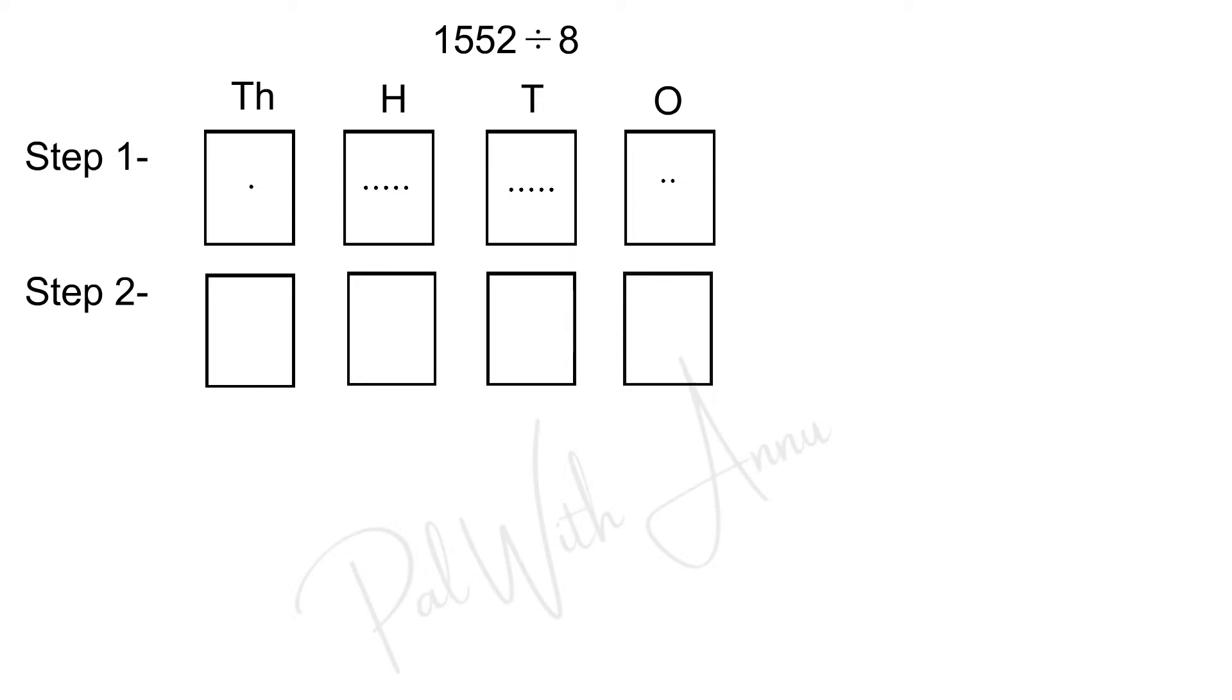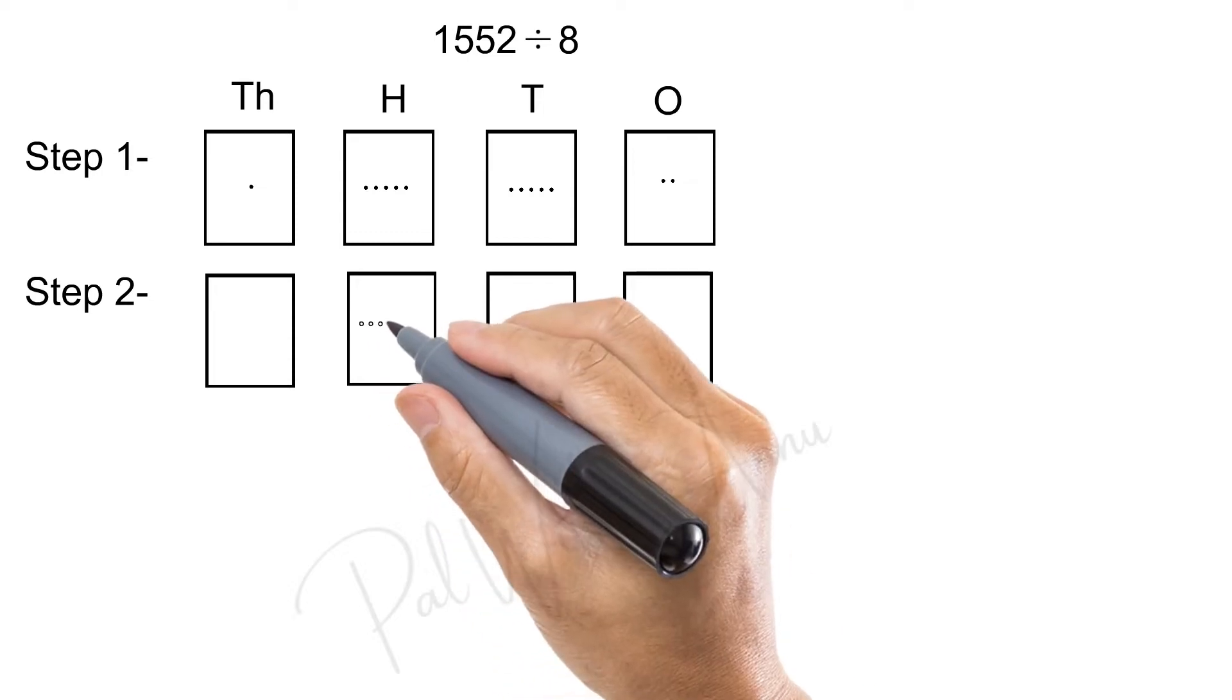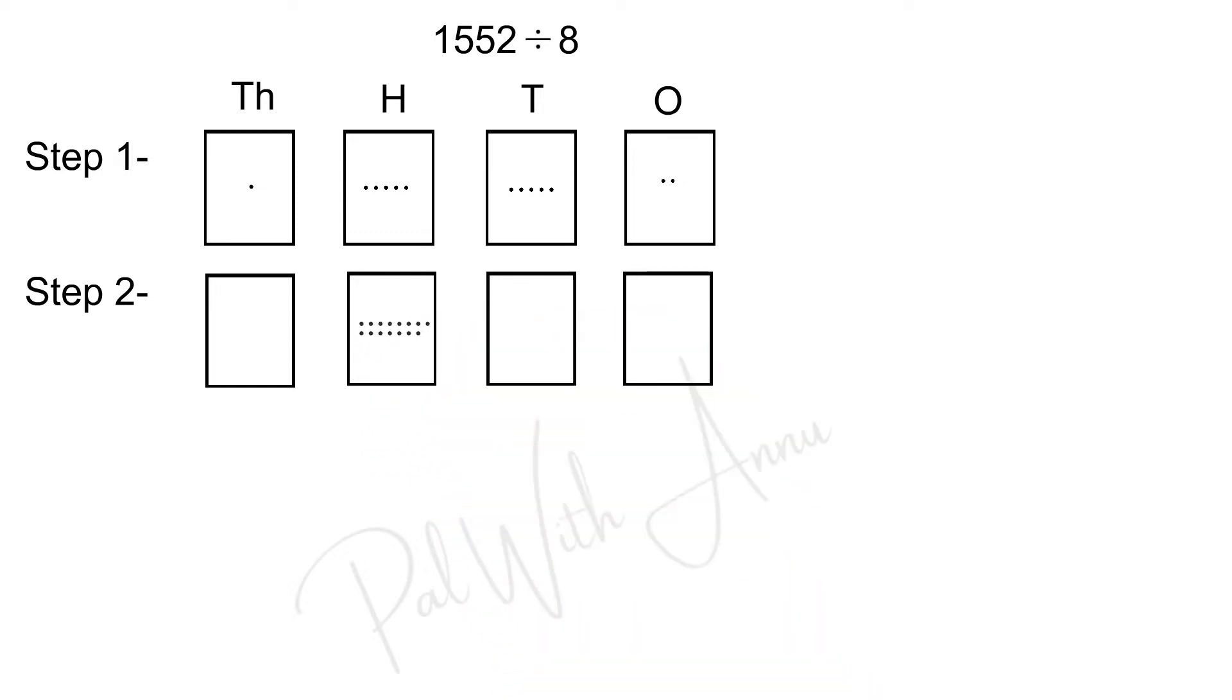In 100's box, the number is 5. When you move 1 from 1000's box, totally, it will become 15 in 100's box. Now, how will you write 15 in 100's box? We have to write 8 dots in the first line and 7 dots in the second line. So, totally, it will become 15.